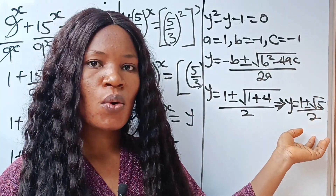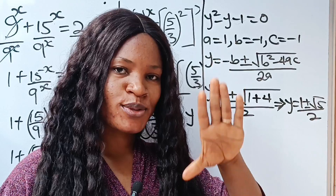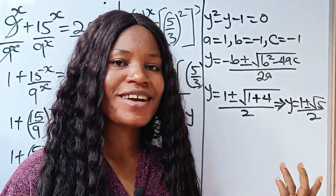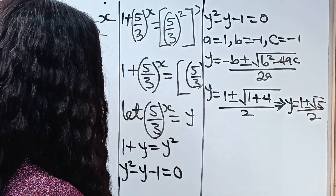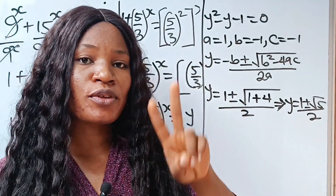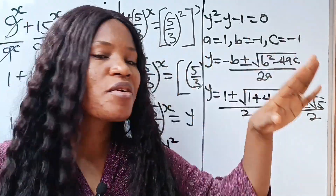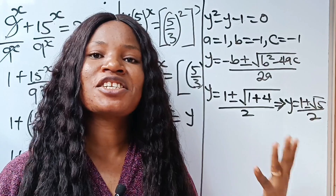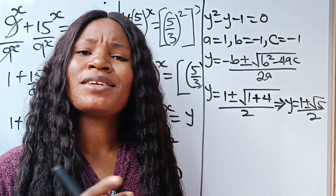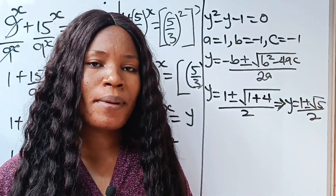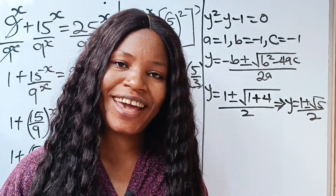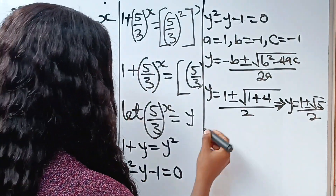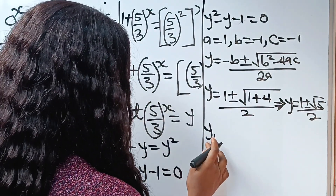This is where I want you to start paying attention because this is where it actually gets more interesting. I upload two videos daily, so anytime you have the chance, please click on the channel and come to my page. From here we have two values of y. The first value is y equals 1 plus root 5 over 2.